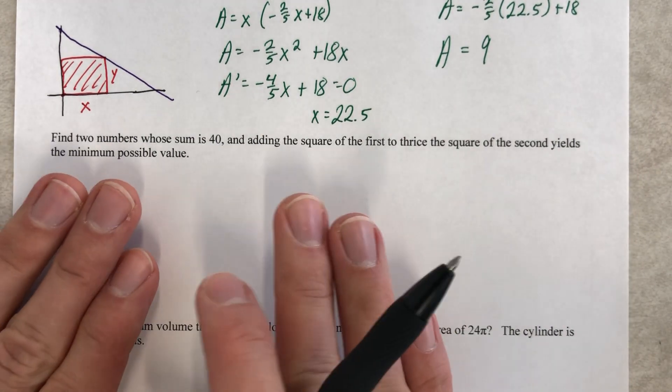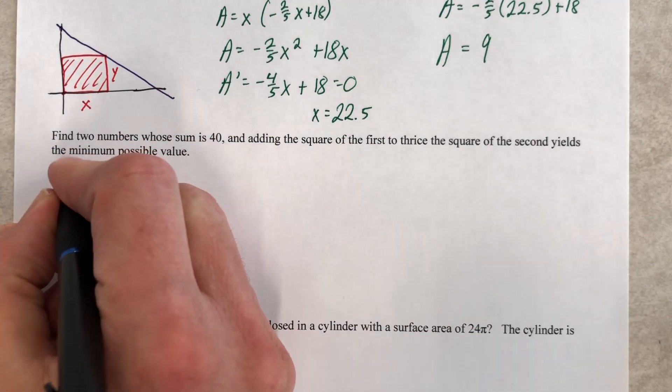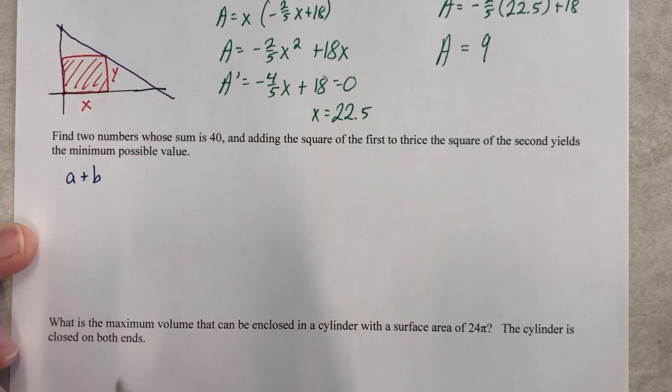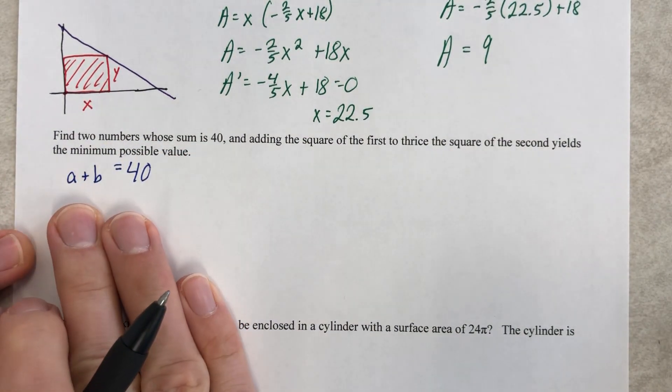There are going to be two formulas, something I know and something I don't, and here's what I know. I have two numbers, A and B, X and Y, M and N, whatever. Their sum is 40. And that is what I know.